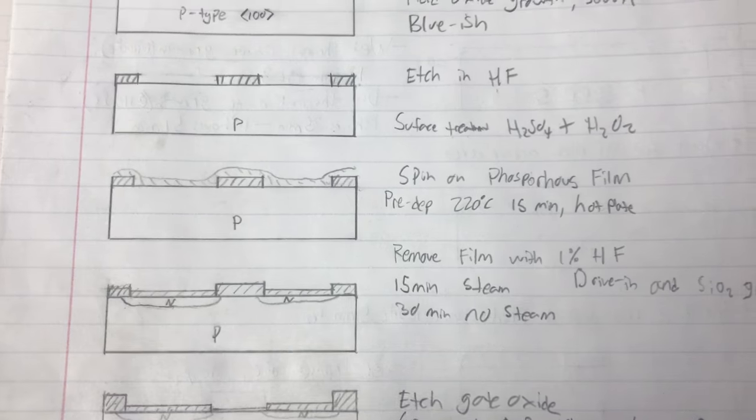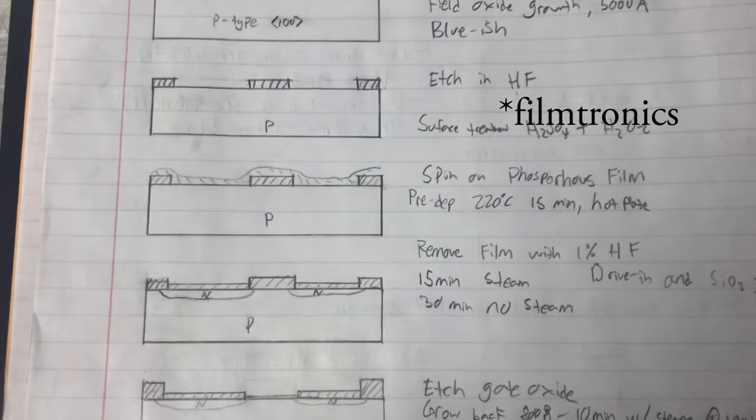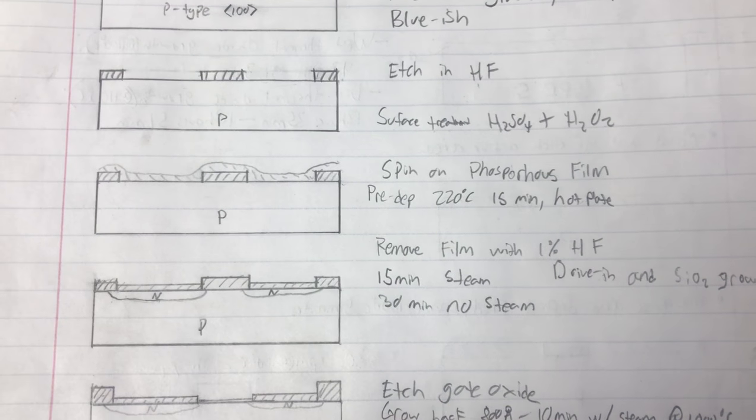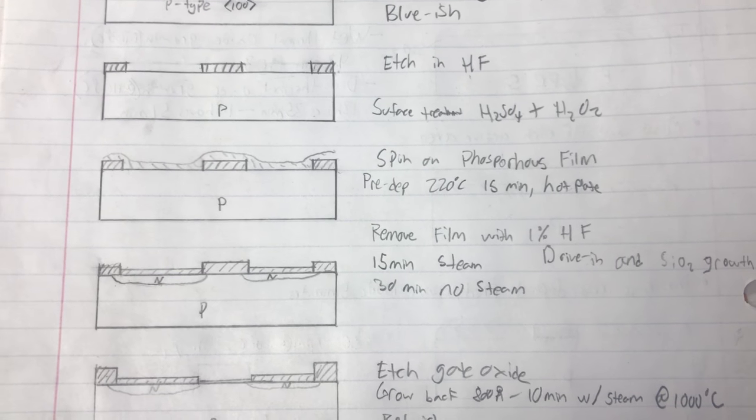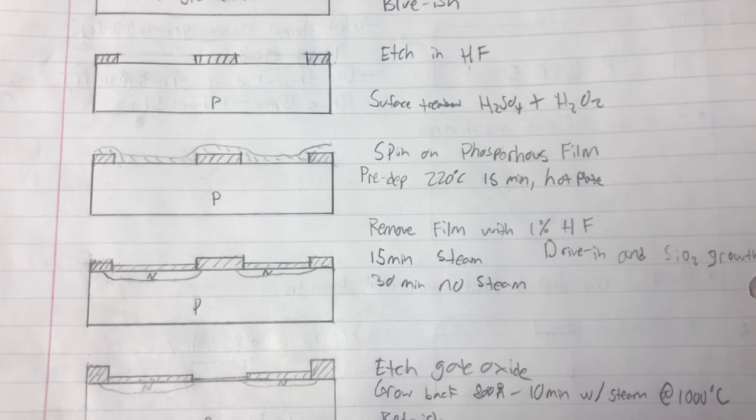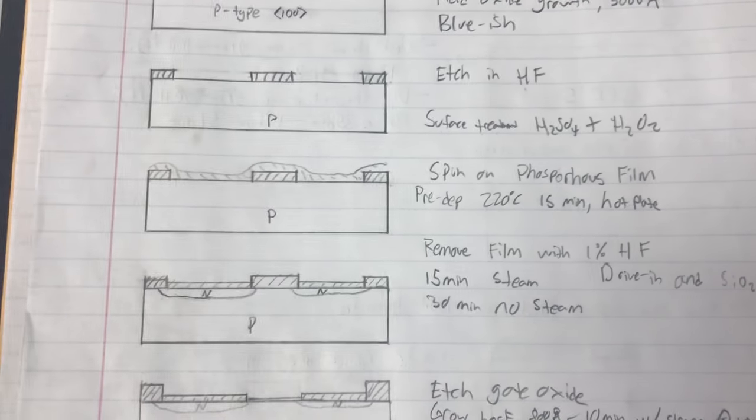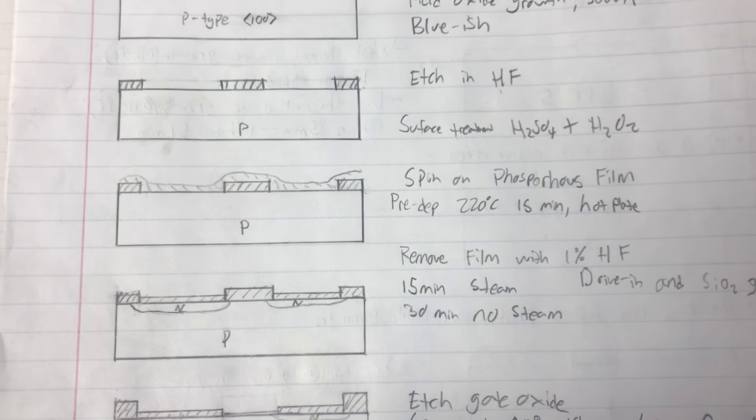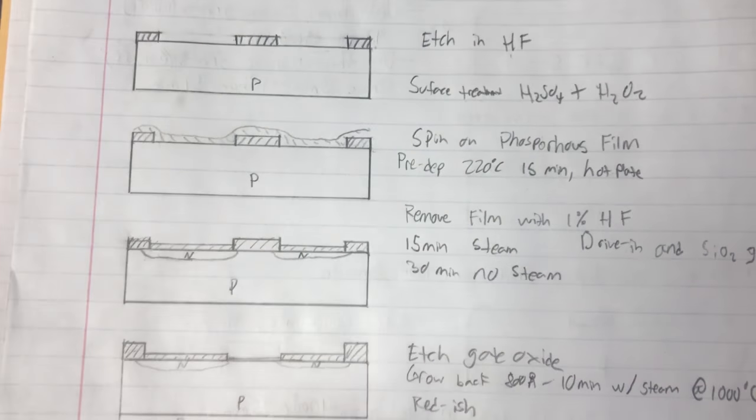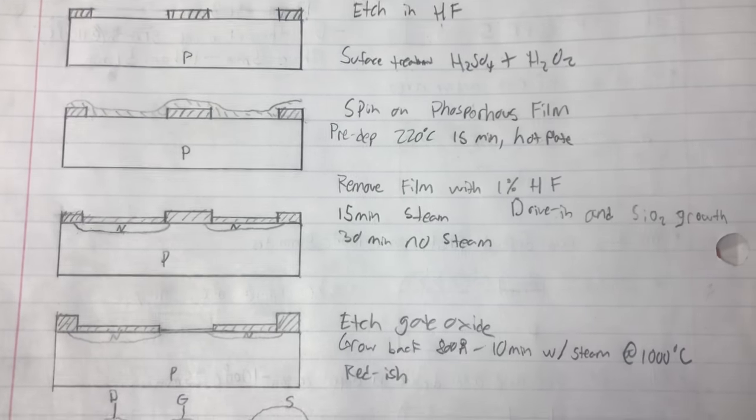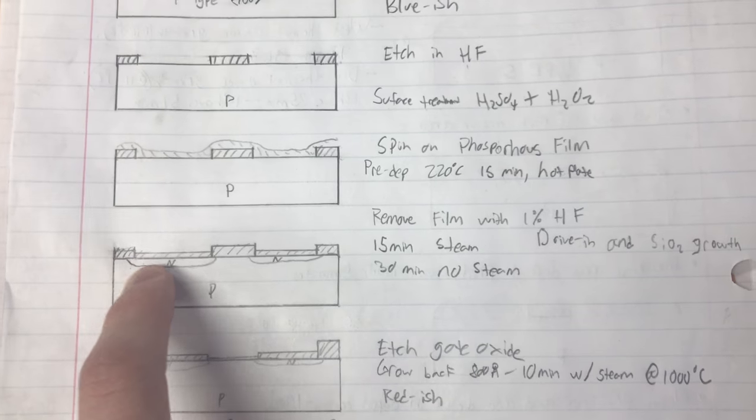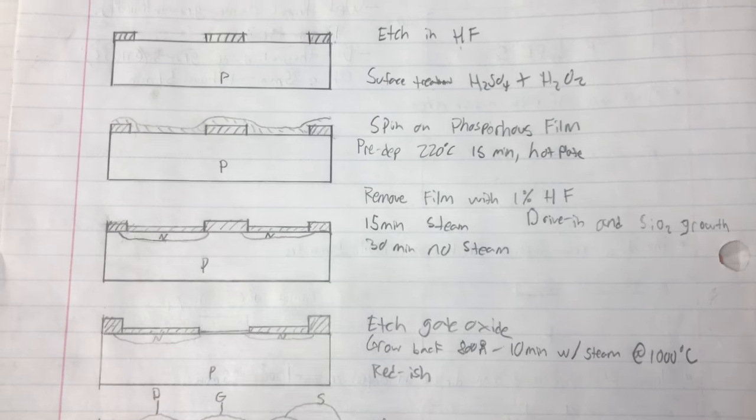The other option is you can buy a commercial spin-on diffusant. Spintronics sells one, and so does Emulsatone. They're rather expensive, though. In this video, I'm going to be using P509 Phosphorus Dopin from Spintronics, and I'll go get that out of my fridge in a little bit. You have to store it at low temperatures, so it's a longer shelf life. So, you spin on that coating onto your wafer, and then you put it onto a hot plate.